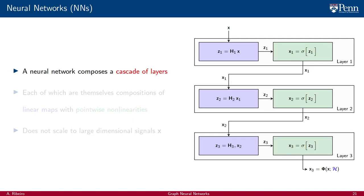Before we define convolutional versions, we define plain or fully connected neural networks. A neural network is a composition of a cascade of layers, each of which is itself the composition of a linear map H with a pointwise nonlinearity sigma. The first layer takes a signal X as an input, processes it with a linear function and a pointwise nonlinearity to produce an intermediate output. Intermediate layers take the output of the previous layer and again process it with a linear function and a pointwise nonlinearity.